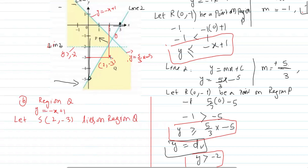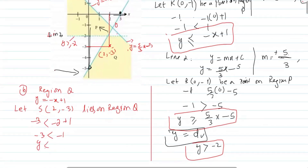Point S (2, minus 3) lies in region Q. Substituting into the equation of Line 1: y equals minus x plus 1 gives right side equals minus 2 plus 1 equals minus 1. Left side y equals minus 3. Since minus 3 is less than minus 1, and the line is solid, the first inequality for region Q is y less than or equal to minus x plus 1.